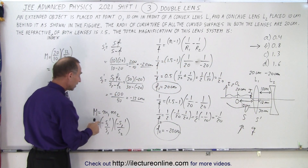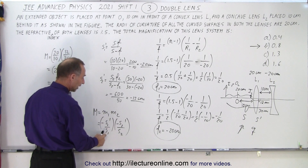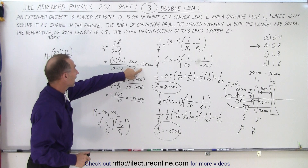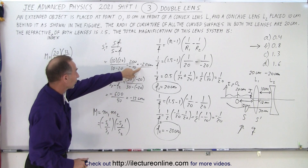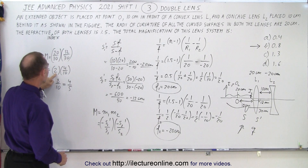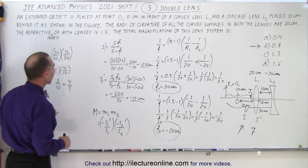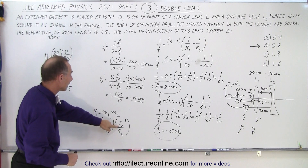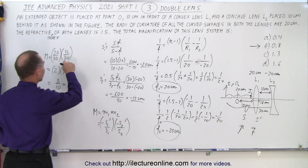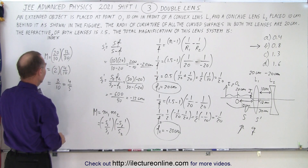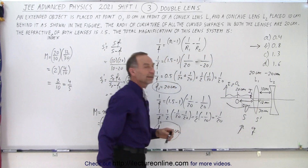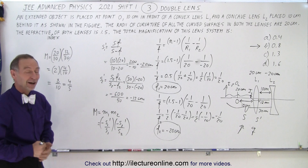The magnification is the negative ratio of image distance over object distance for each lens. For lens one: negative S1' over S1 — negative times negative is positive — so positive 20 over 10 gives a magnification of positive 2. For lens two: negative S2' over S2 — again negative times negative — gives positive 12 divided by 30, or 4 tenths. So total magnification is 2 times 4 tenths equals 8 tenths or 4 fifths. The answer is B: 0.8. And that is how it's done.